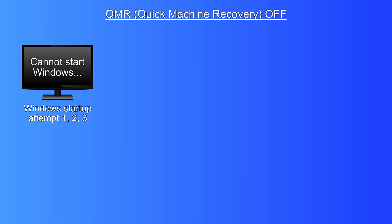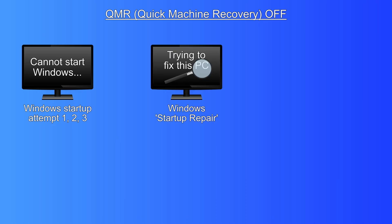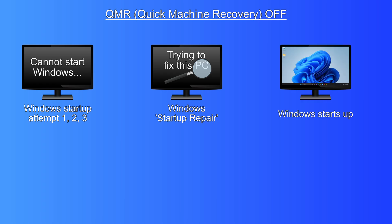So what happens if you don't have Windows Quick Machine Recovery turned on? Well, in the same situation, if your computer cannot start up Windows due to a critical error, then Windows will attempt to start up a few times. If it can't, then Windows Startup Repair will begin to examine your computer and try to fix the problem. If a fix is found, then the repair will be put into place and Windows will start up.